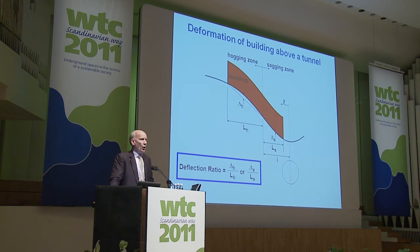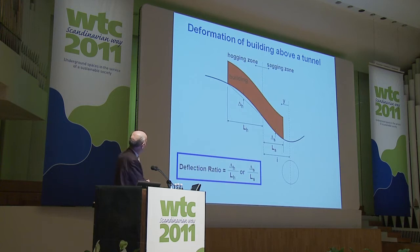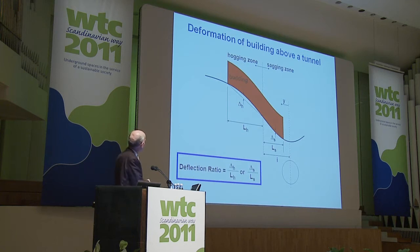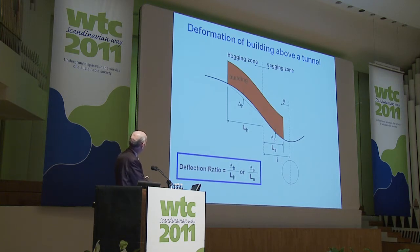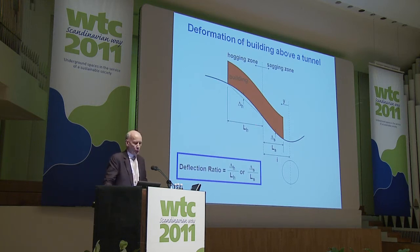The theme of my talk is about how buildings deform. The real question is: does a building follow the same settlement trough as the ground itself, which requires it to be very flexible? I'm going to distinguish between buildings in the hogging zone — to the left of the point of inflection — and buildings in the sagging zone. The crucial parameter is the deflection ratio: delta H divided by distance LH, which represents the curvature or differential settlement.